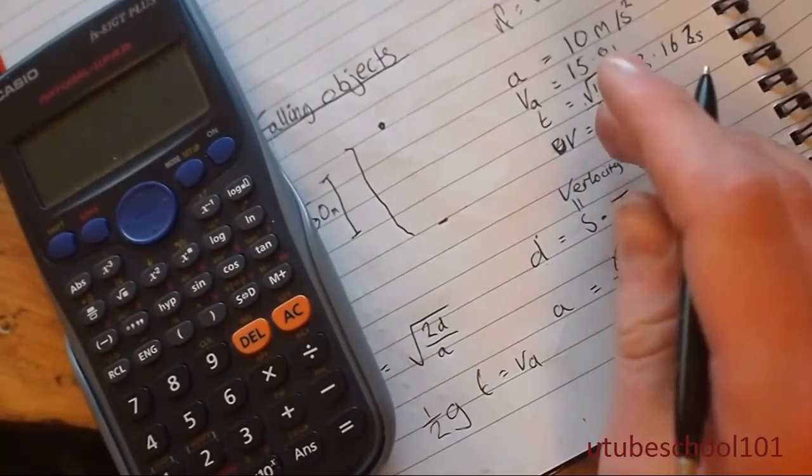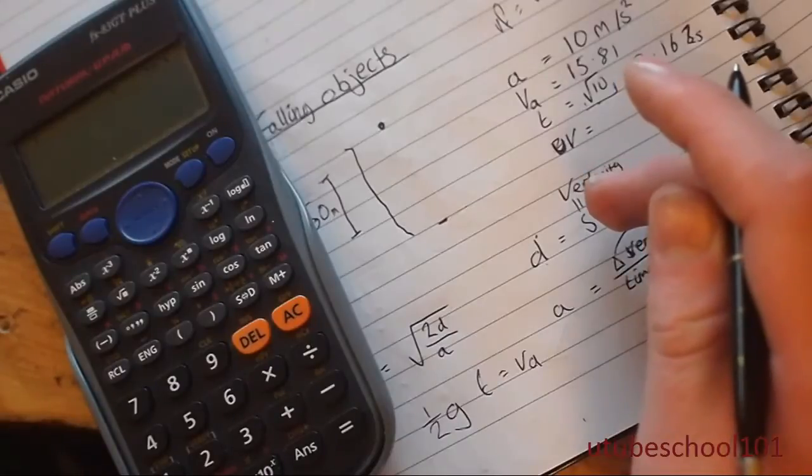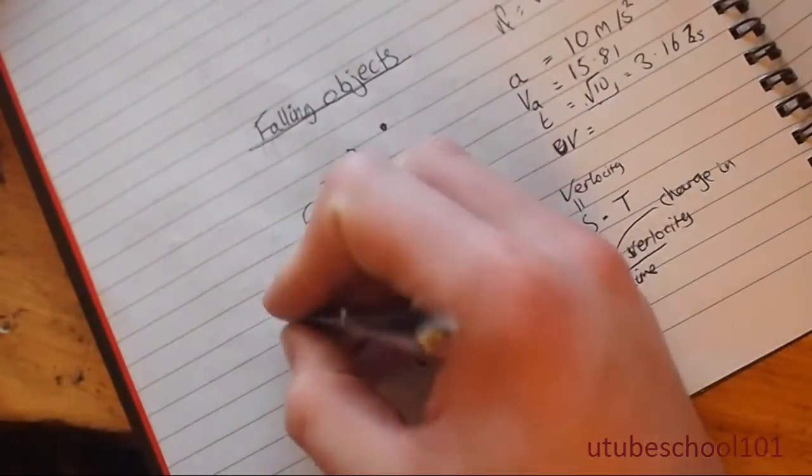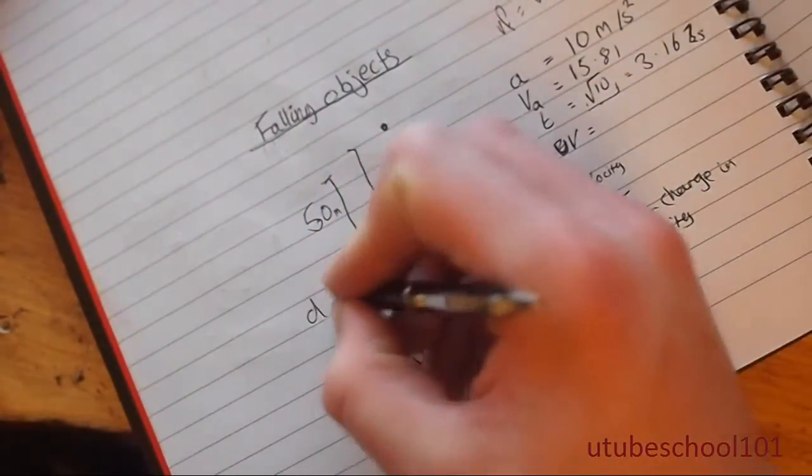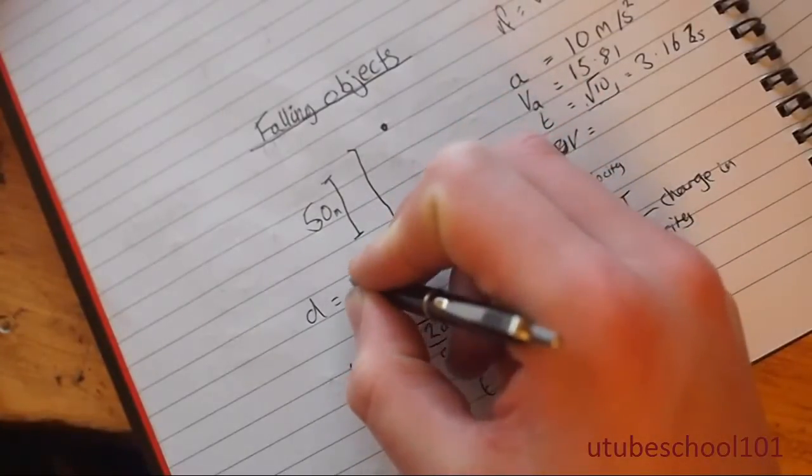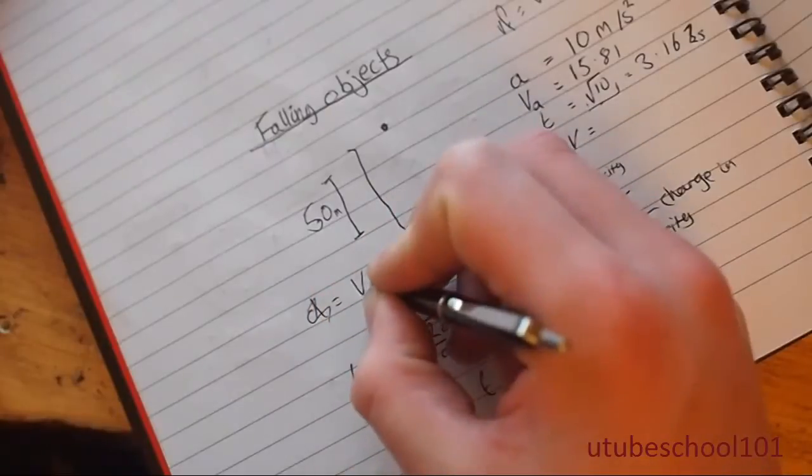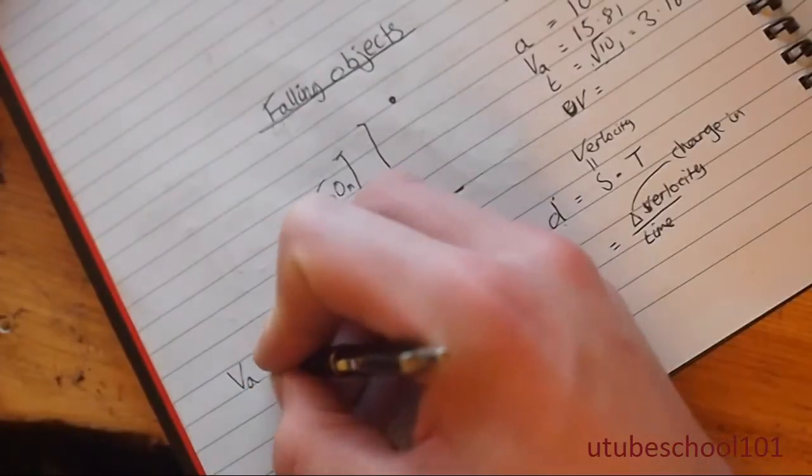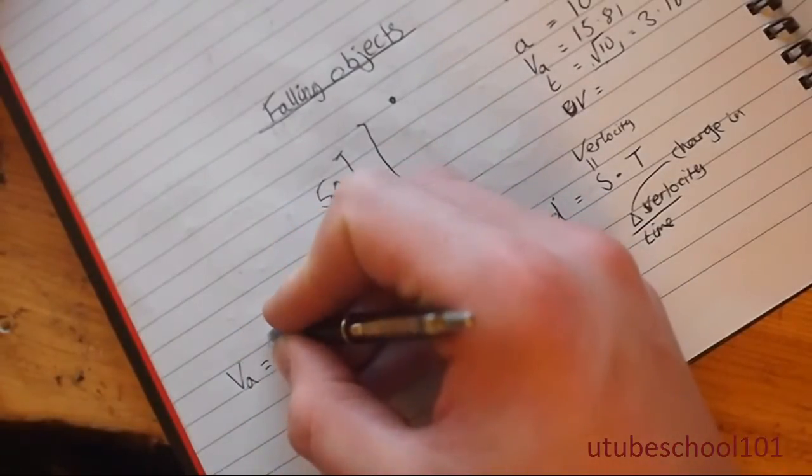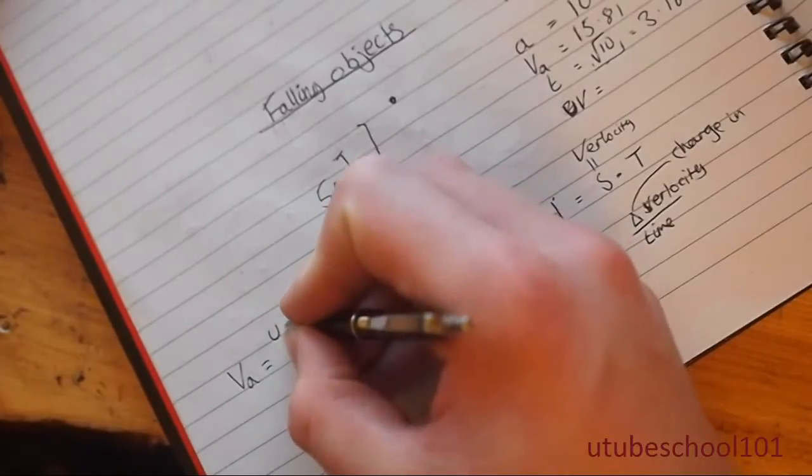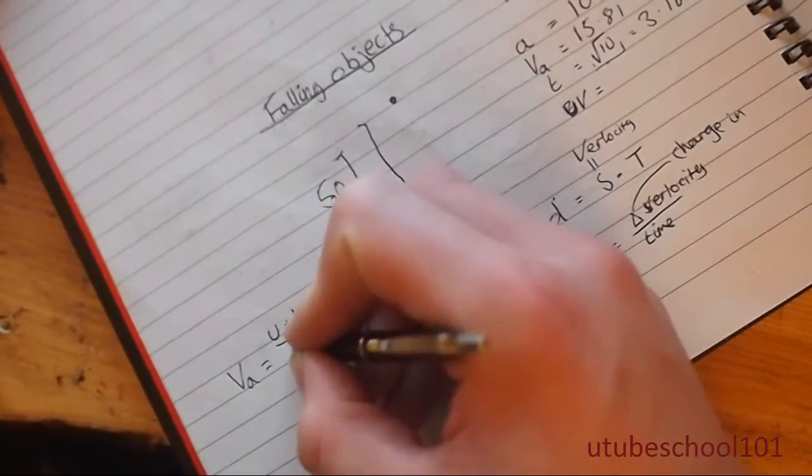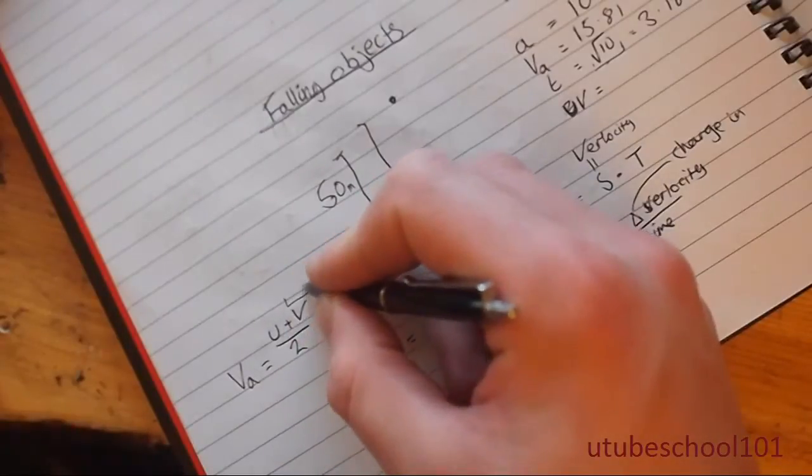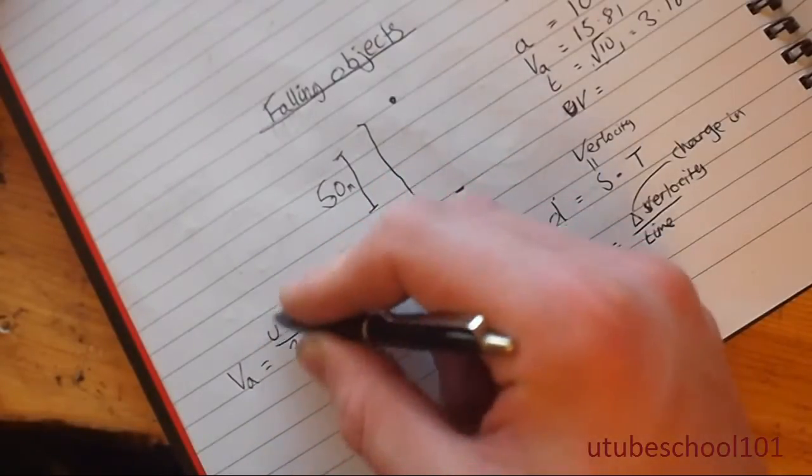Now that I have that, I can work out the final velocity by using the formula, the very well-used formula. Perhaps not very well-used, but used in physics. The average velocity is the initial velocity, which is represented by u, add v divided by 2. So how can I get this down so that the final velocity is the only one on the right side?